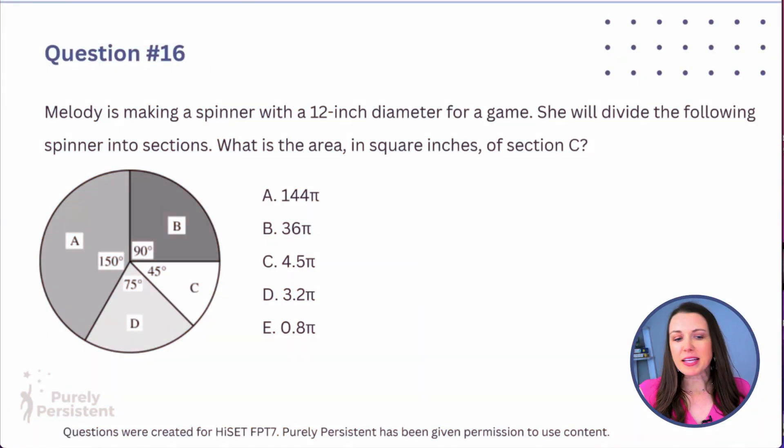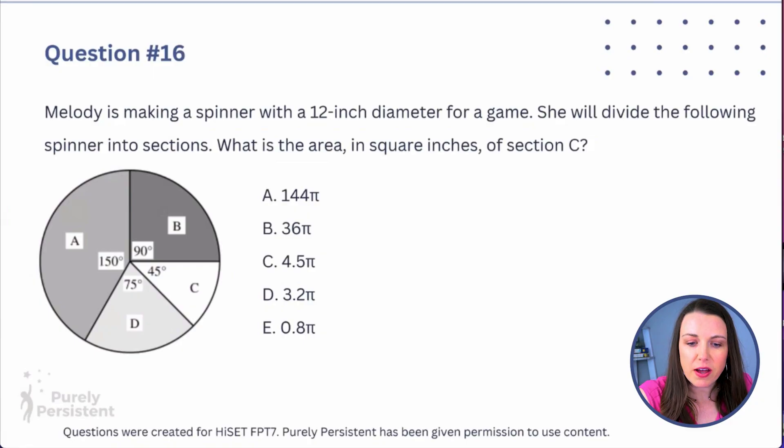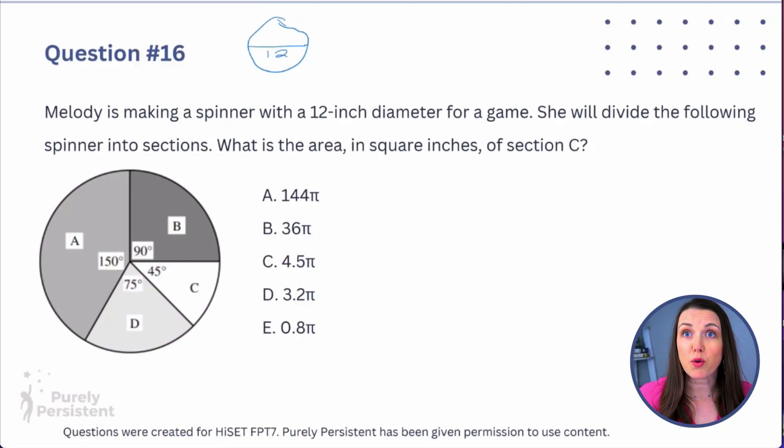Question number 16. Melody is making a spinner with a 12-inch diameter for a game. She will divide the following spinner into sections. What is the area in square inches of section C? First thing we need to do is remember what diameter is. So if I draw a circle and I bring it across, that's going to be the diameter, right? You order a pizza, you order a 12-inch pizza, that's going to be the diameter all the way across.